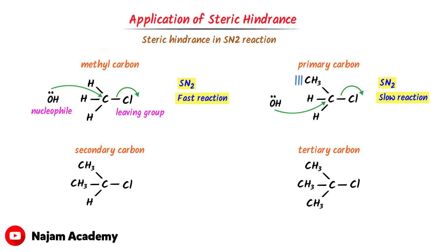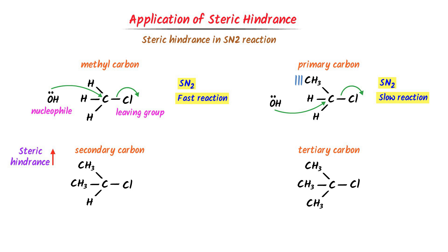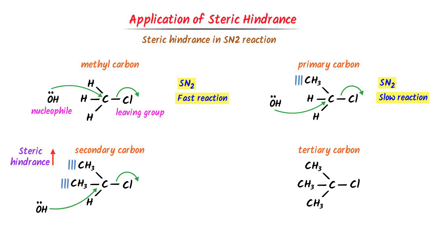Thirdly, in the case of secondary carbon, there are two methyl groups, due to which there is more steric hindrance in this molecule. The nucleophile cannot attack from this side or from this side; it can only attack from one side. Thus, the hydroxide ion attacks on this carbon and chlorine leaves the molecule. It is an SN2 reaction, but it is a very slow reaction compared to the second and the first one.